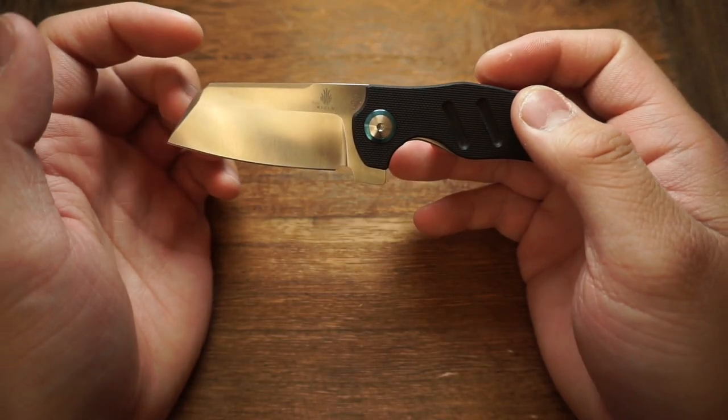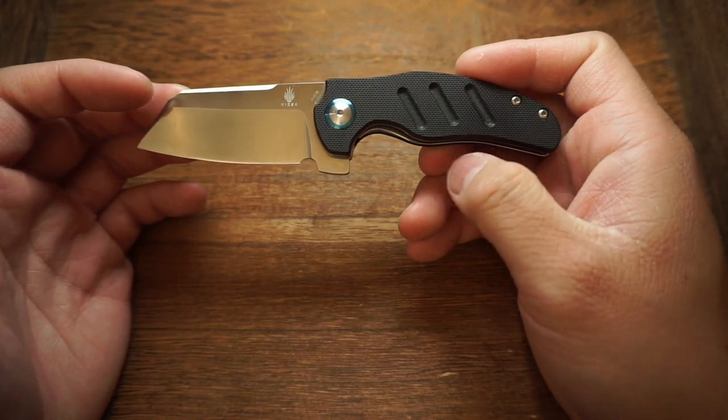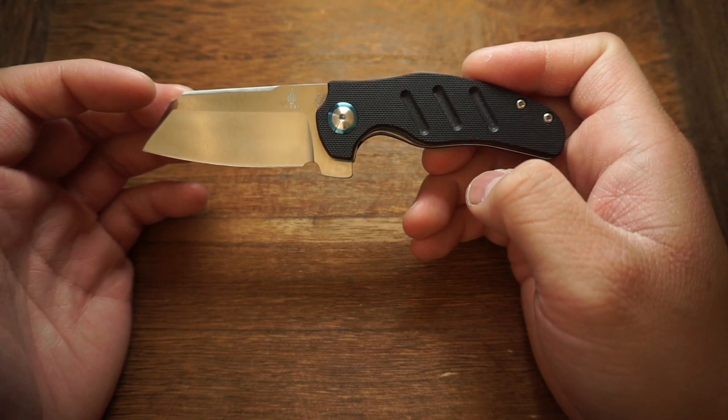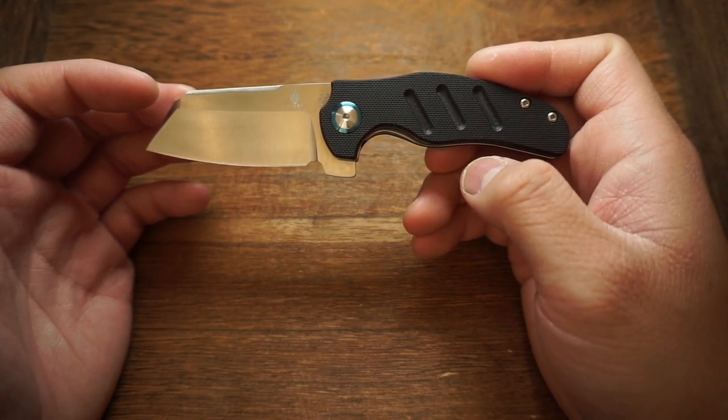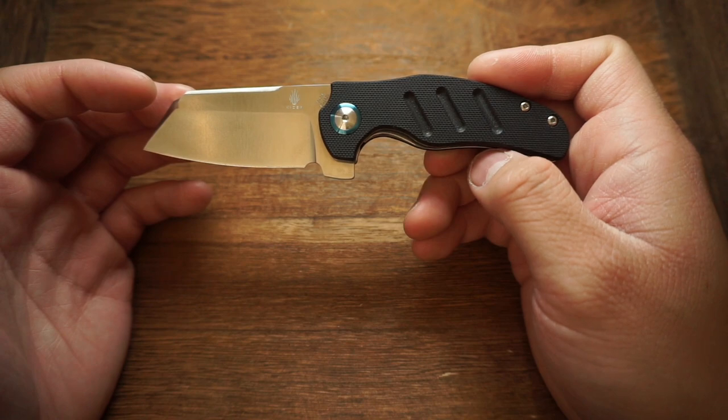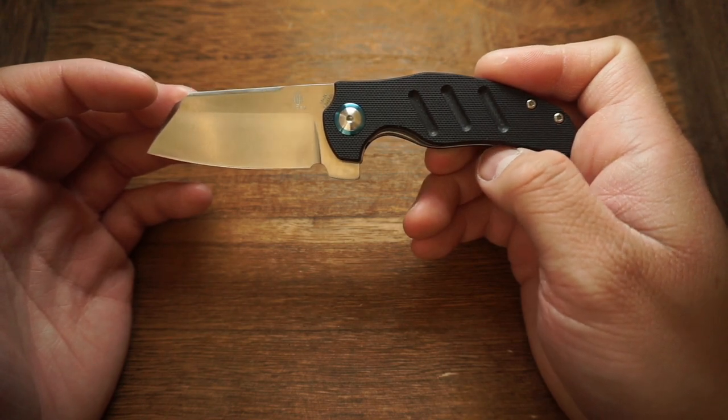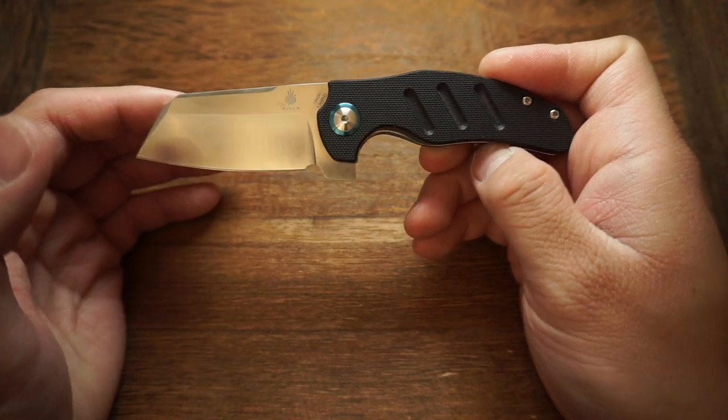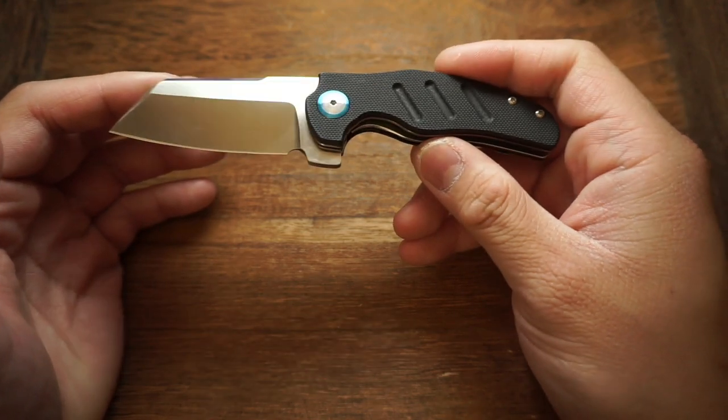We did go with the black G10 variant. So they do have a bunch of different versions with G10. You've got the blue and the green. And then they also do have the titanium frame lock versions, which I definitely want to get my hands on. I actually want to go for either the XL or the standard version. That's how much I like this knife.